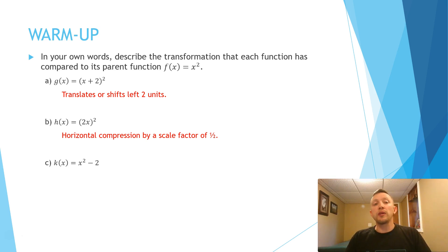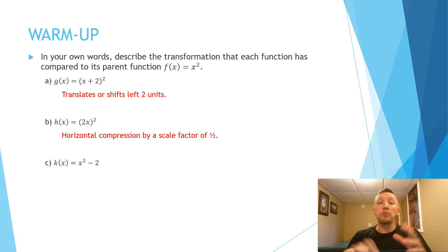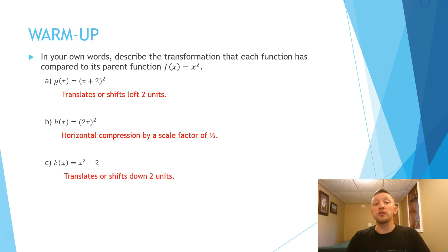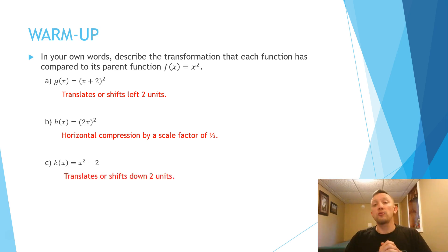Lastly, with letter c, x squared minus 2 — that minus 2 is happening after we square the x. That tells me this is going to be affecting the graph vertically. It's going to be a vertical translation, so we're going to say it shifts down two units. That's the warm-up.